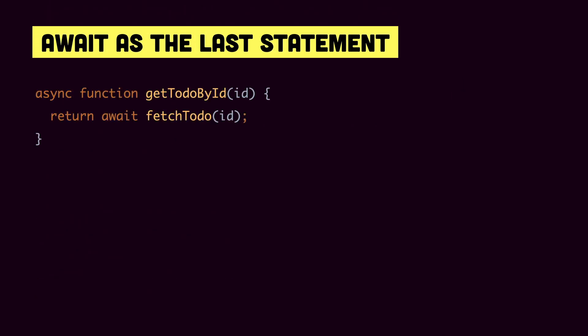Also, if await is the last statement in a function, you don't need to put it — so the function with the last await is equivalent to the function without it.